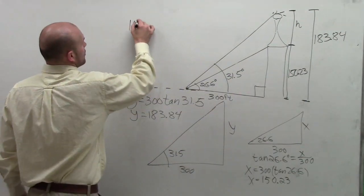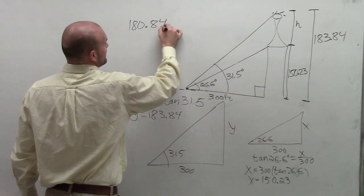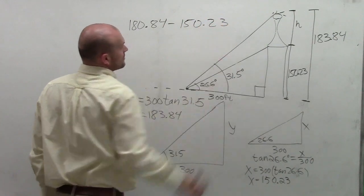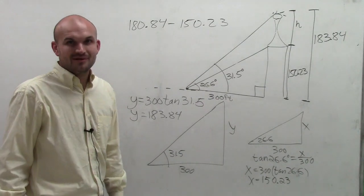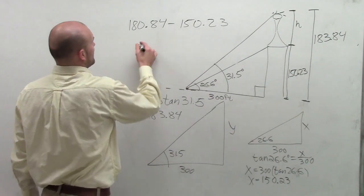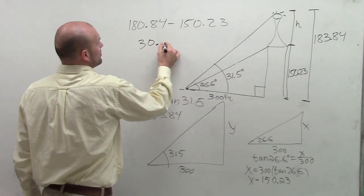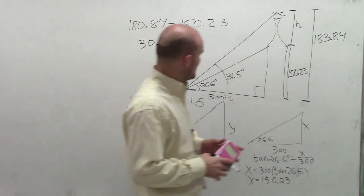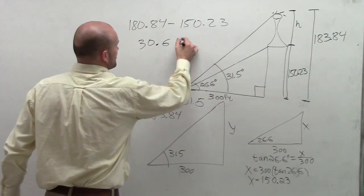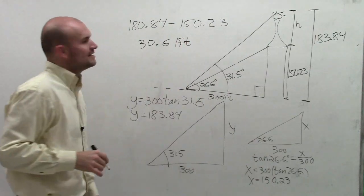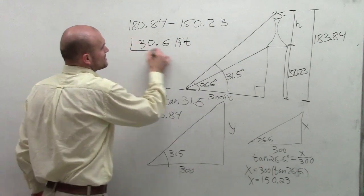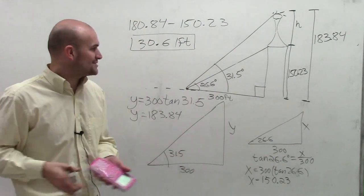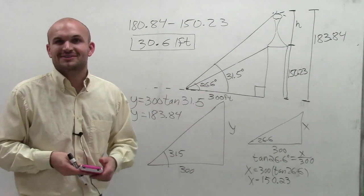So from the ground to the top of the antenna is 183.84 feet, and from the ground to the base of the antenna is 150.23 feet. I subtract the two: 183.84 minus 150.23, and that gives me 33.61. So the height of the antenna is approximately 30.61 feet. And that is how you solve a problem with multiple triangles.